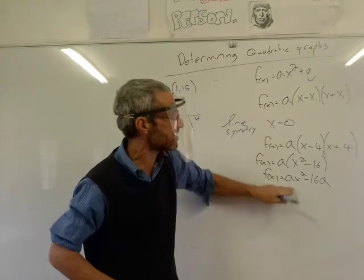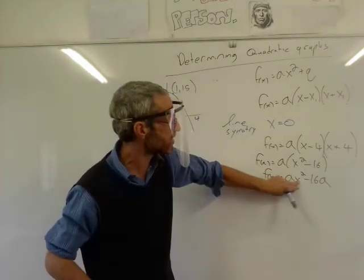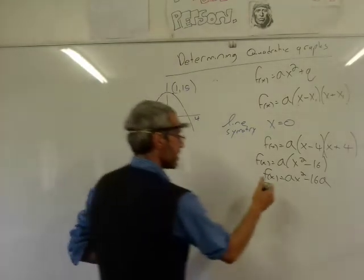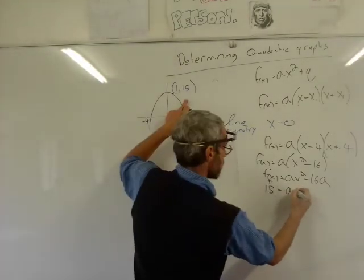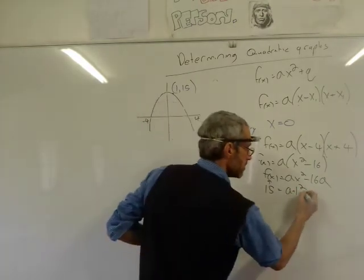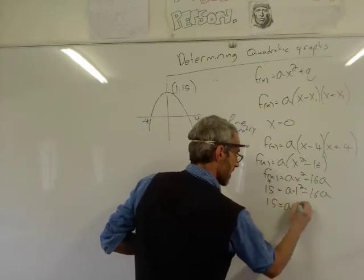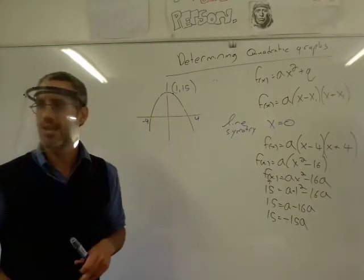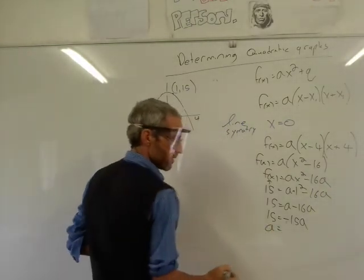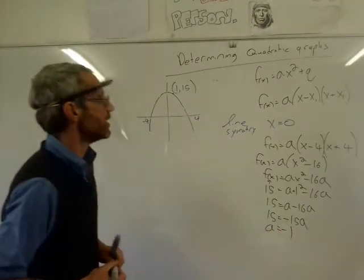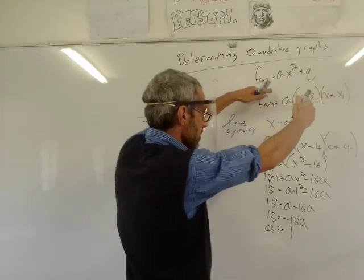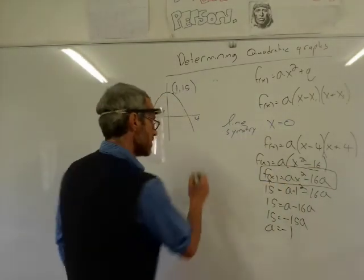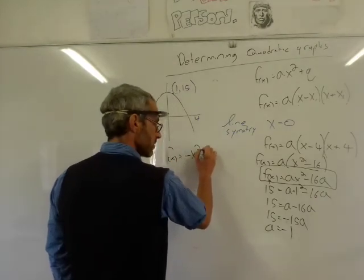Now I know you've got an equation of f(x) with just a. How would I find a? I substitute the other point — (1, 15). So: 15 = a(1²) − 16a = a − 16a = −15a. Therefore a = −1. So f(x) = −x² + 16.